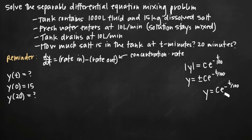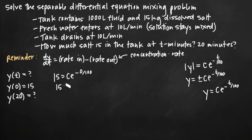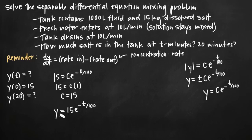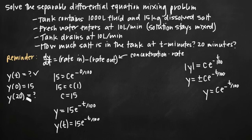Plugging in the initial condition — t = 0 and y = 15 — gives 15 = C·e^0 = C·1, so C = 15. The final equation is y = 15e^(−t/100), which models the amount of salt in the tank at any time t minutes.